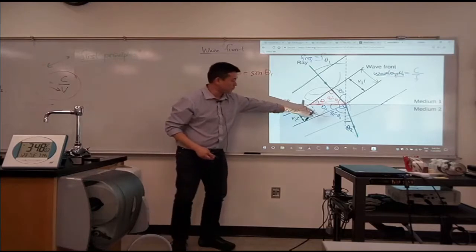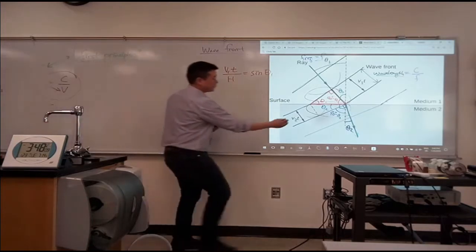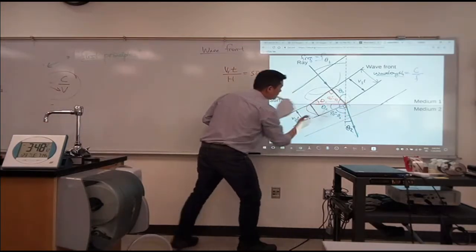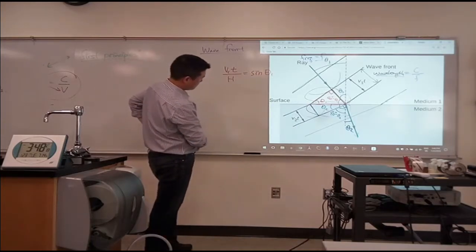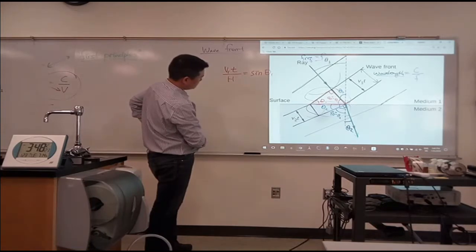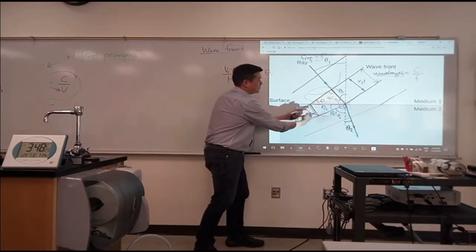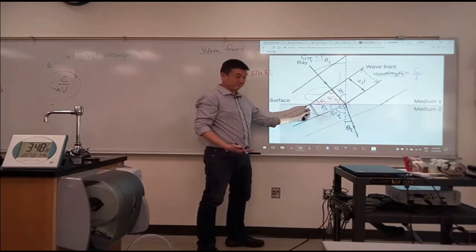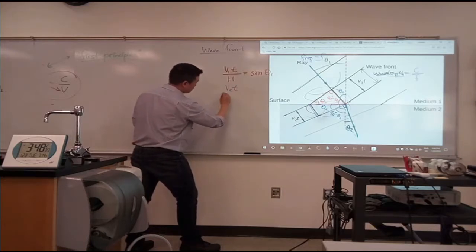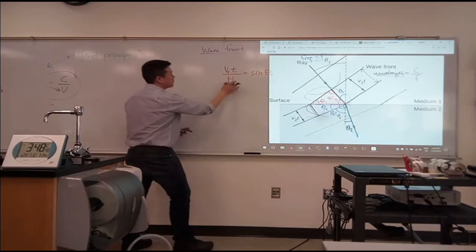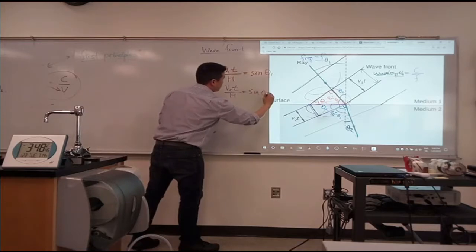Let me write down a similar expression for the other right triangle, for this right triangle here. So wait, is this one adjacent? I don't like that. No, no, no. So the side that I know is this side. It's the opposite to theta two. Good? So I can say opposite side, V2 times T, over the same hypotenuse. So I'm using the same letter H. It's equal to sine of theta two.